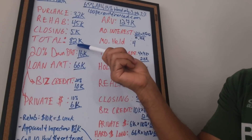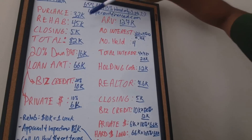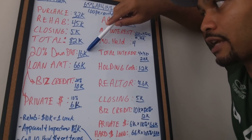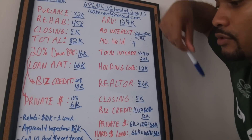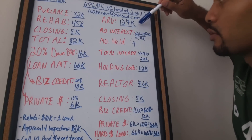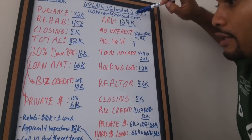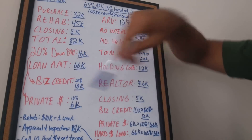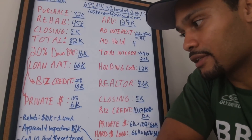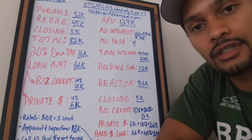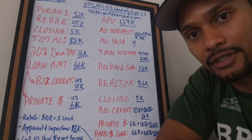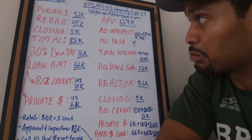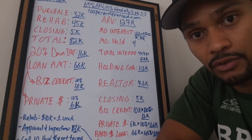Now let's calculate your profit. By the way, a helpful rule of thumb: for every $10,000 you spend on rehabbing, take about a week to rehab. So we're spending $45,000, which should take about four and a half weeks to complete the rehab.